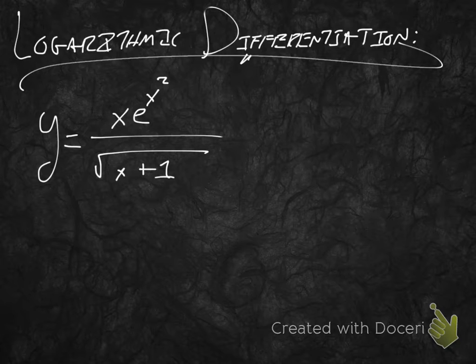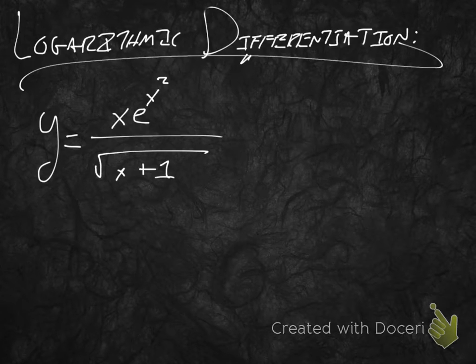The amount of work that's involved in taking the derivative of this using the rules we know is going to be horrible, so let's take log. Let's go ahead and take log of both sides. So, what will that look like? Well, on the left we're just going to have ln y, and then equals, this is a quotient, so taking log turns it into a difference.